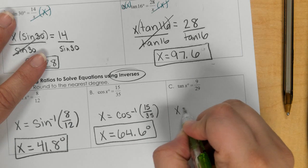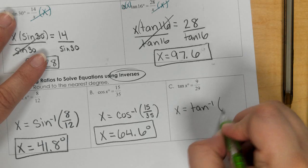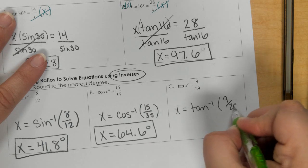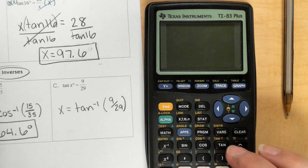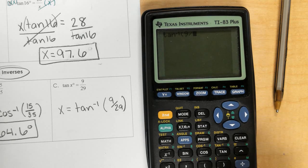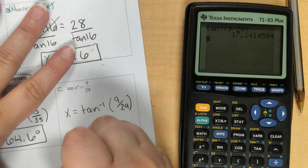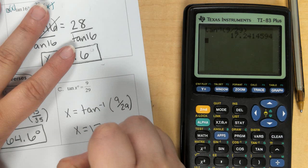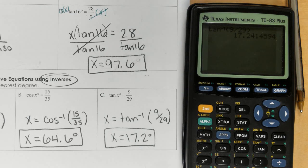Okay, last one. X equals the inverse of tan, fraction 9 twenty-ninths. So, second tan, put in 9 divided by 29, and we get 17.2. So, that was just practicing, can you solve for x when you have the equation set up correctly?